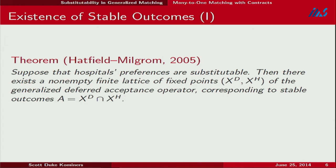The big theorem is that if hospitals have substitutable preferences, then there exists a non-empty finite lattice of fixed points of the generalized deferred acceptance operator that correspond exactly to the set of stable outcomes. In a single theorem, we get existence and lattice structure. We find the set of contracts where the two opportunity sets coincide — where the doctors are providing exactly the services the hospitals want them to provide.